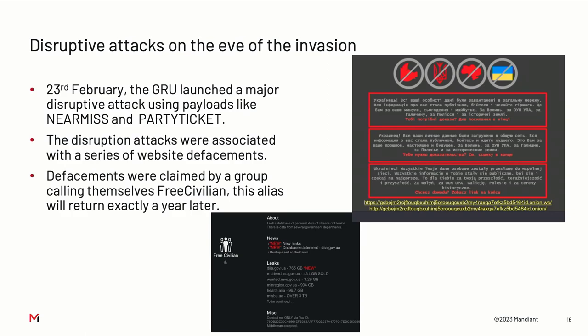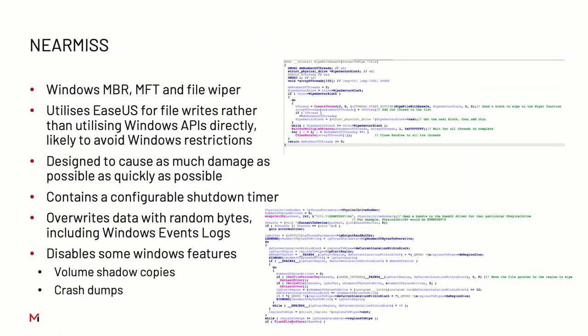Then moving on - the next month, on the eve of the invasion, there was a huge coordinated attack against Ukraine using wipers called NearMiss and PartyTicket. These were associated with some defacements by a group calling themselves Free Civilian, which would do web defacements literally a year later - these fake groups they set up trying to claim glory. NearMiss is a master boot record, master file table, and file wiper.